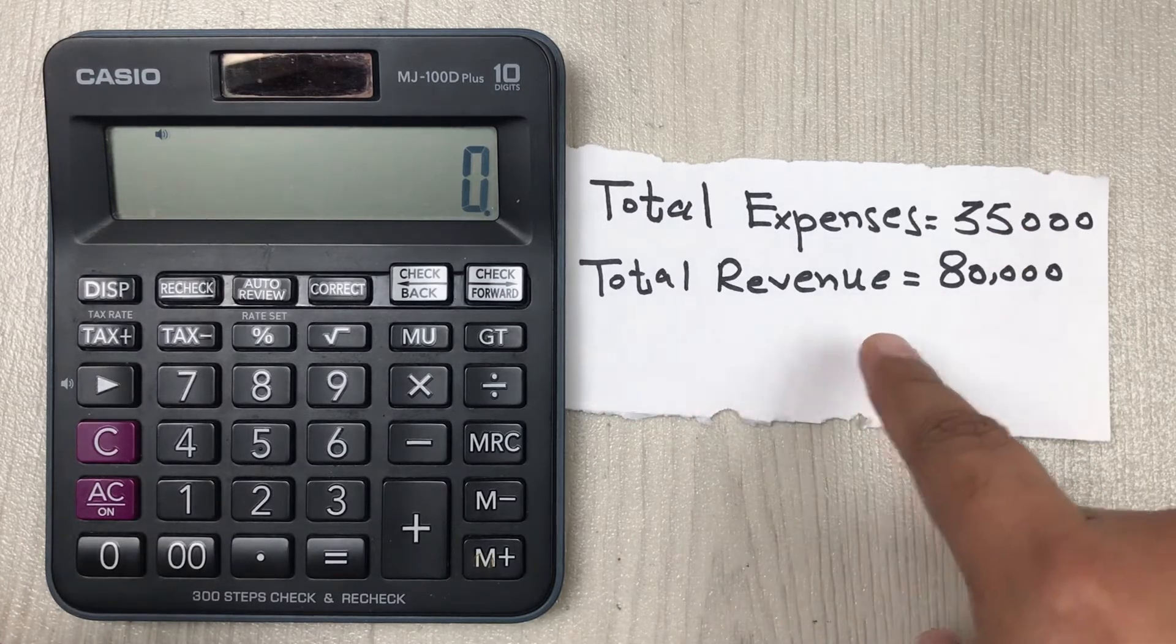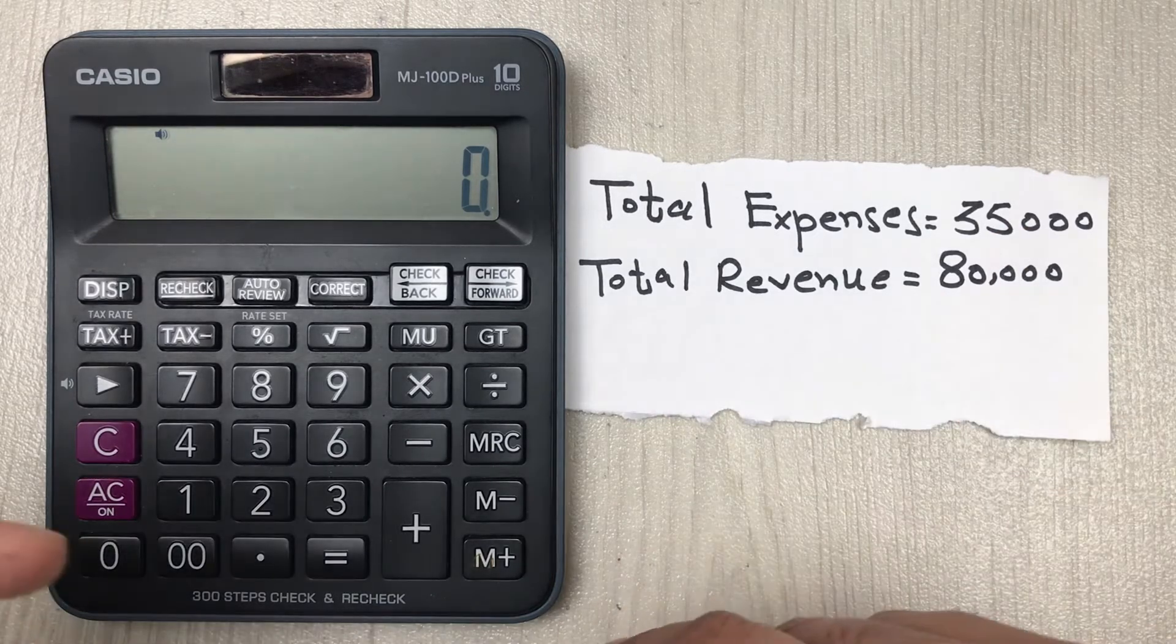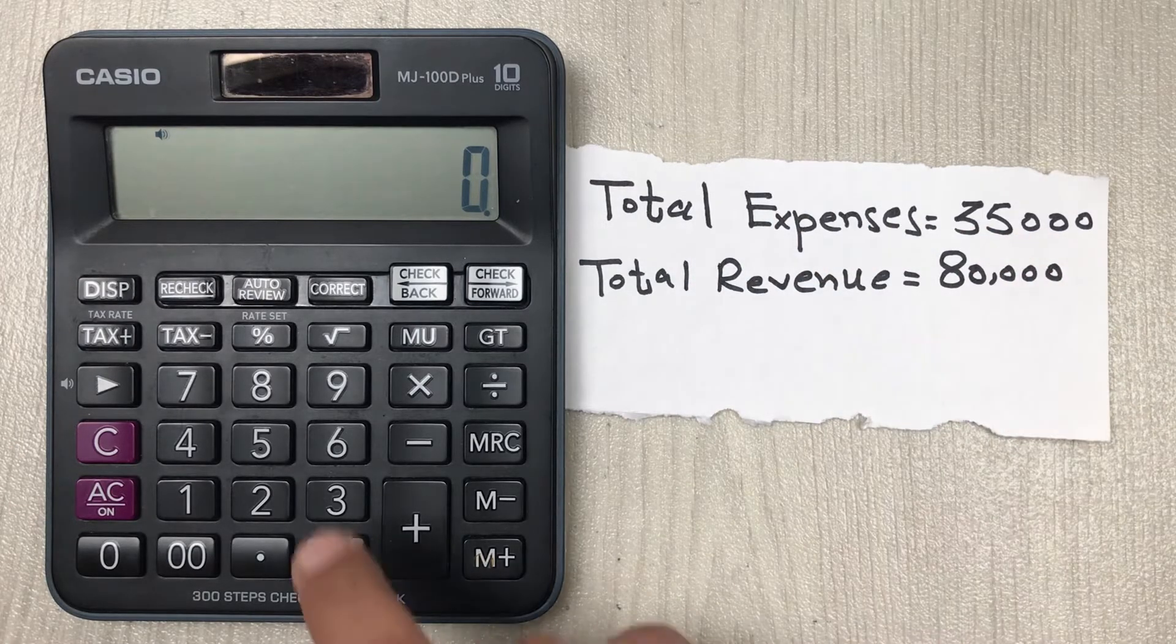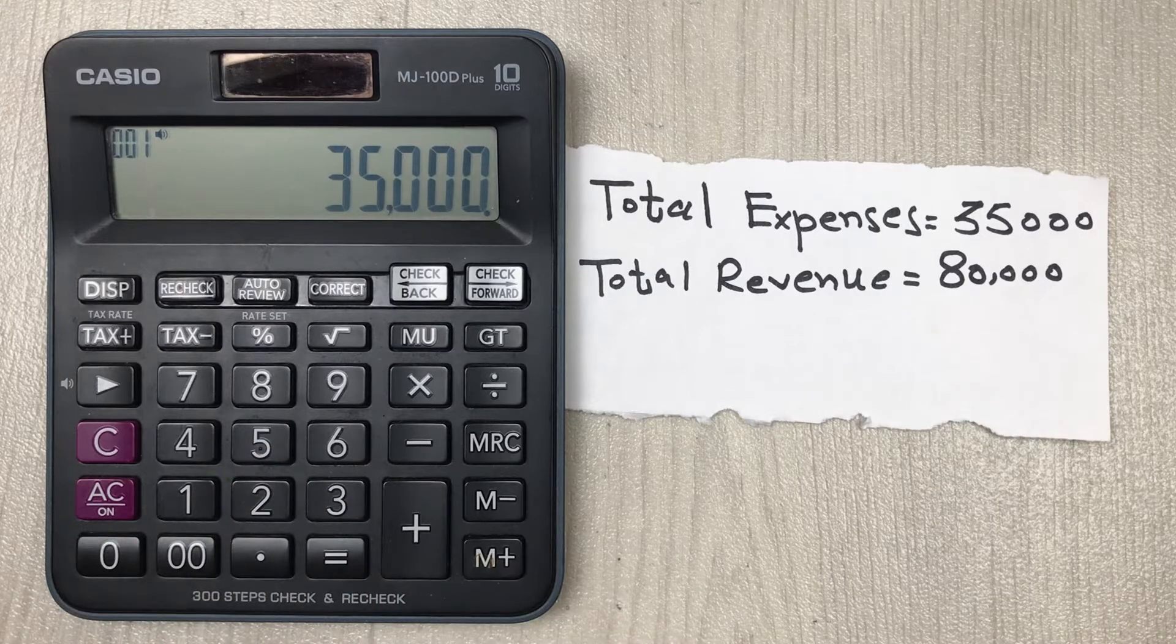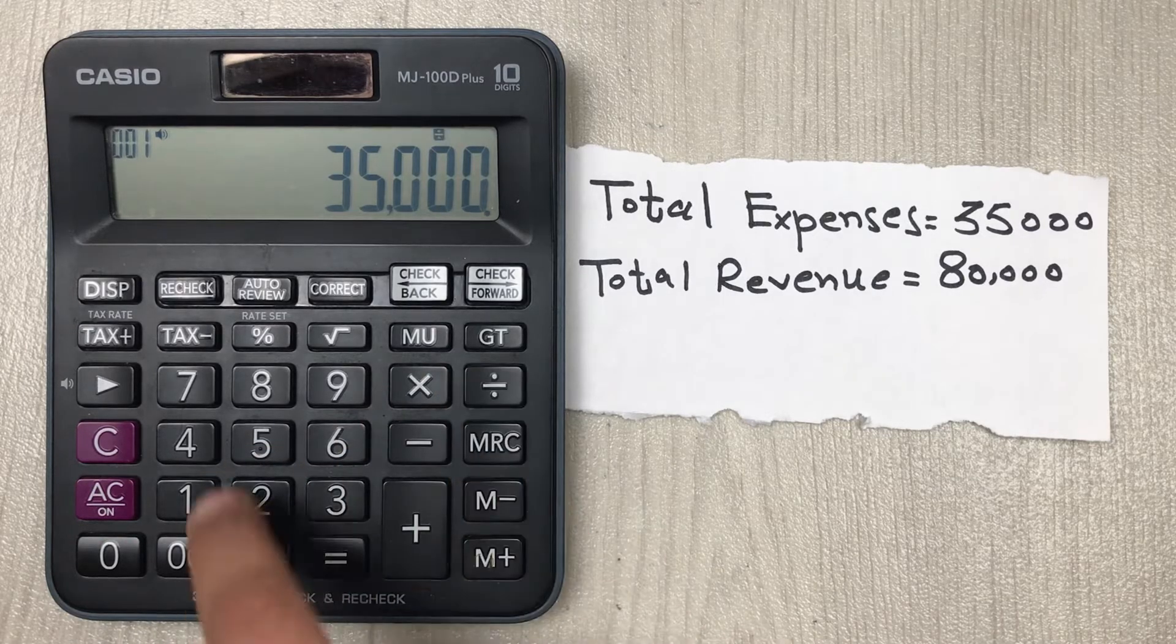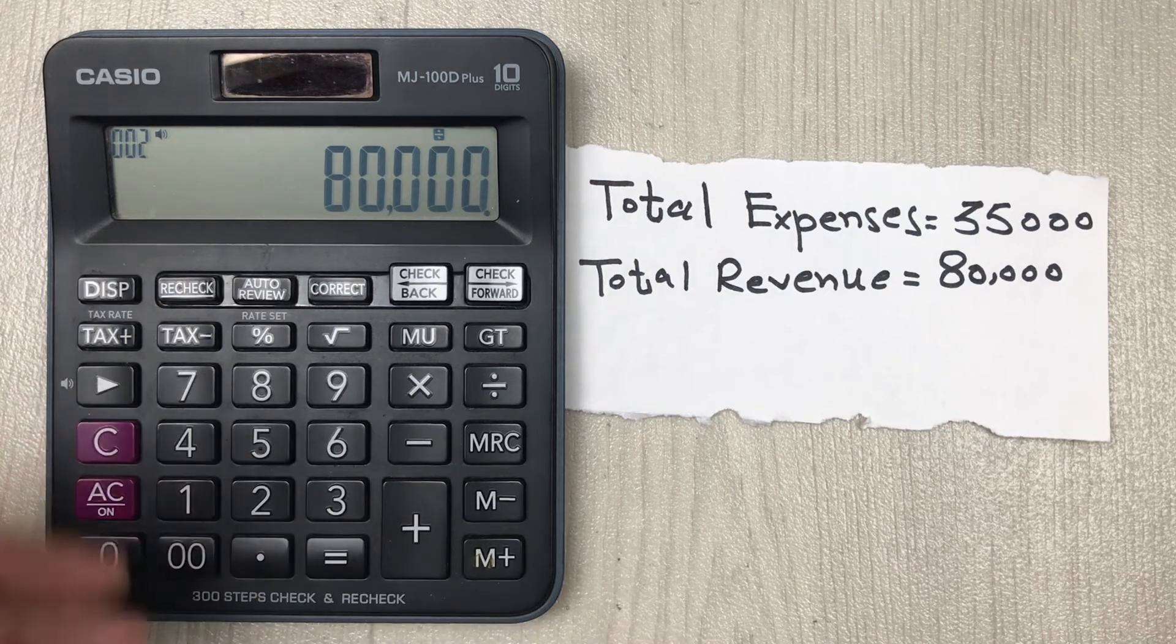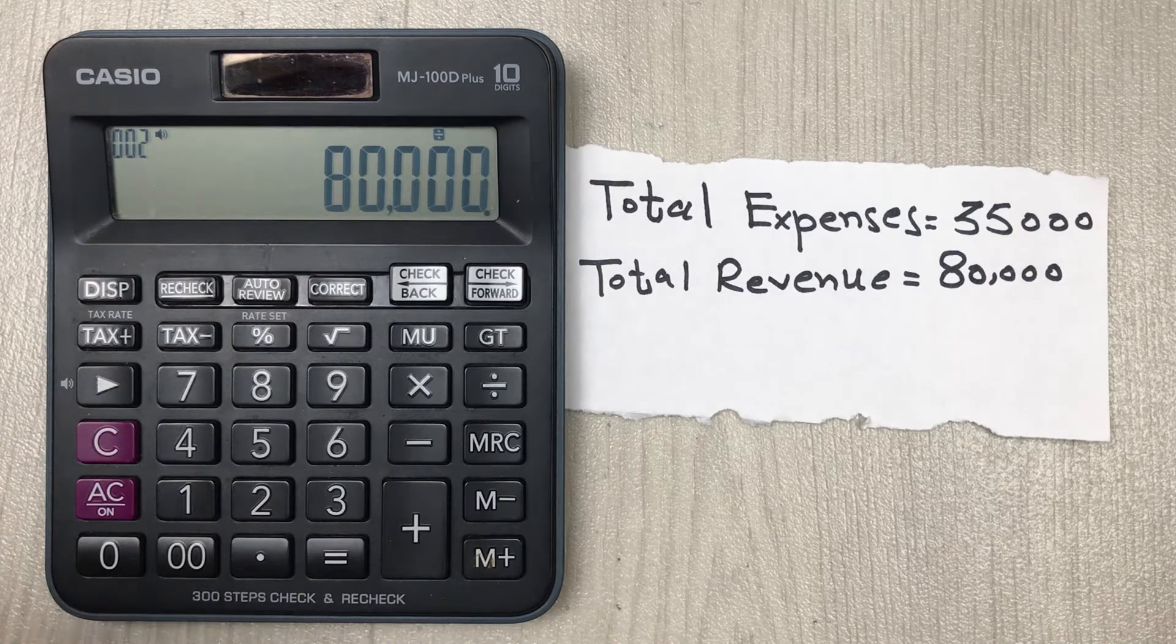And the total revenue is $80,000. So in the first step we divide this 35,000 with 80,000. We type here 35,000 divide 80,000, and then in the next step we multiply it with 100.